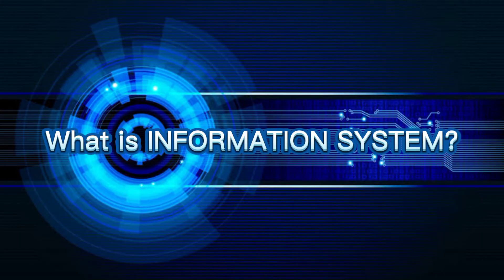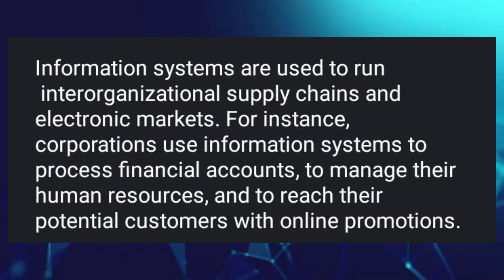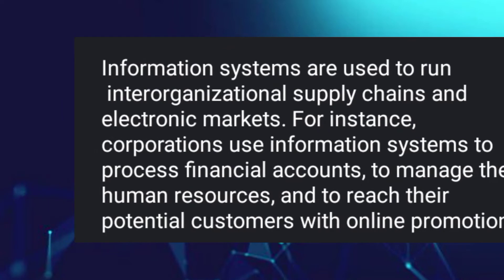What is information system? According to Britannica.com, information systems are used to run inter-organizational supply chains and electronic markets. For instance, corporations use information systems to process financial accounts, to manage their human resources, and to reach their potential customers with online promotions.